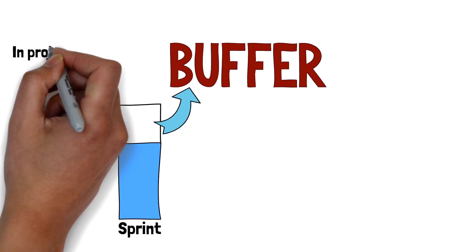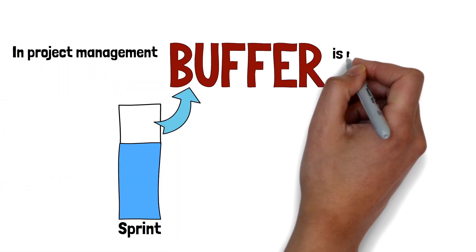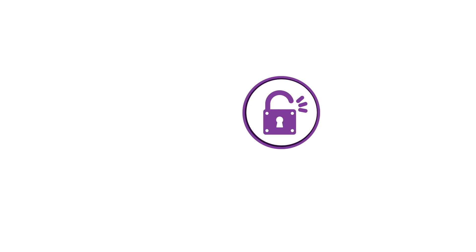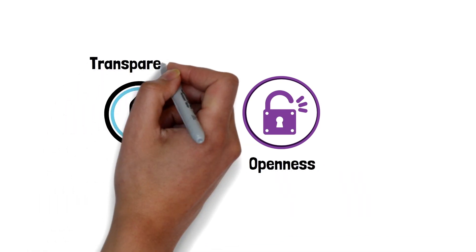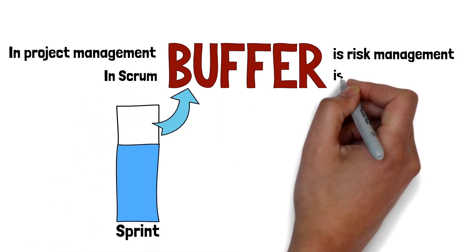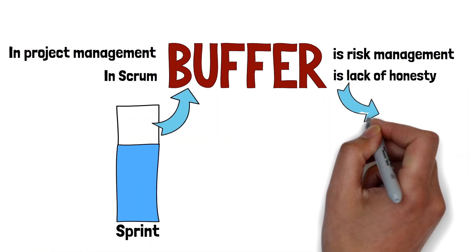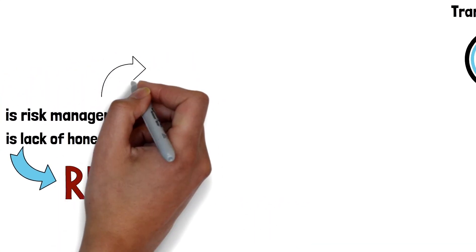This is because in project management, adding buffers is considered as managing risk. There are many people in our industry who use Scrum without living the Scrum values and principles. One of the Scrum values is openness, and one of the Scrum pillars is transparency. In a Scrum context, adding buffers is the manifestation of a lack of transparency and lack of openness — hence very risky.